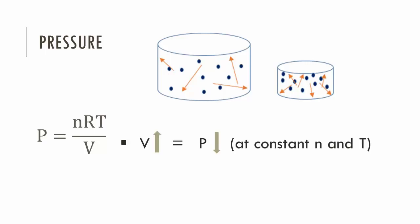In other words, at a constant number of moles and a constant temperature, if we increase the volume, the pressure will decrease. At constant volume, an increase in temperature will increase the pressure and a decrease in temperature will decrease the pressure.